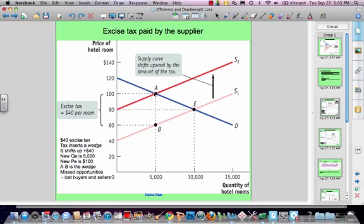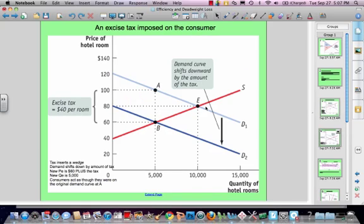And again, A minus B, since it's the same distance here, these are parallel lines, this is the size of the wedge, and that equals the $40 excise tax. Now we talk here about missed opportunities. The missed opportunities represent all those people who are going to buy hotel rooms and all the people who are going to sell hotel rooms and all the opportunities to do that that are now gone because the price has gone up and the quantity supplied has gone down as well.